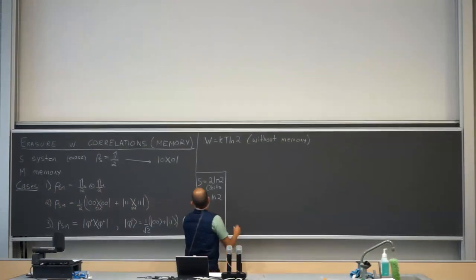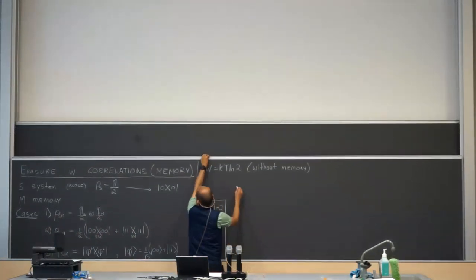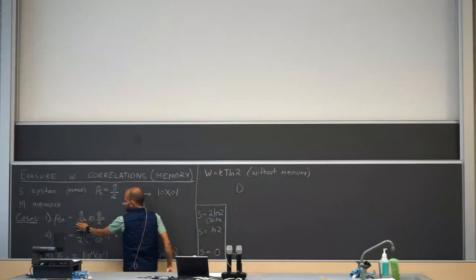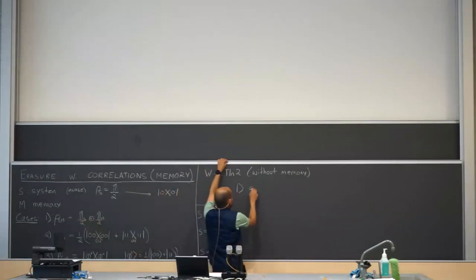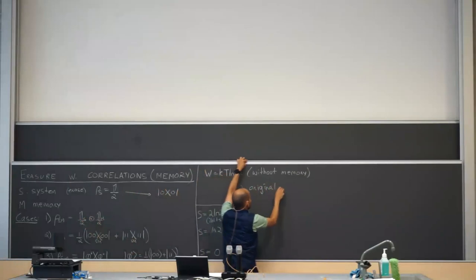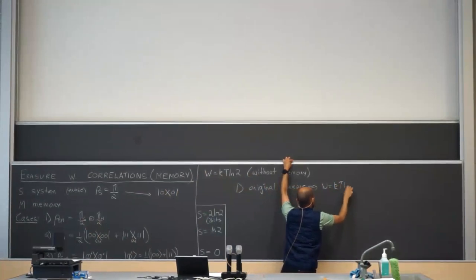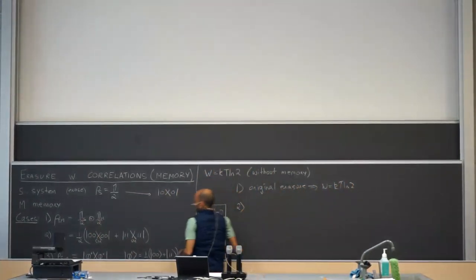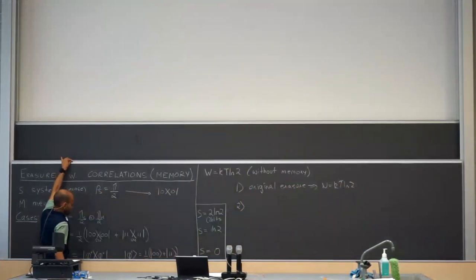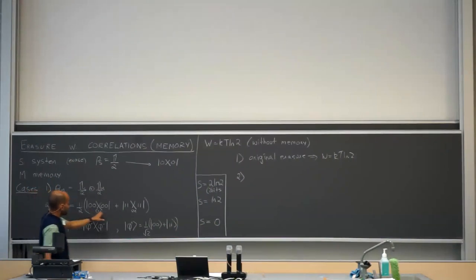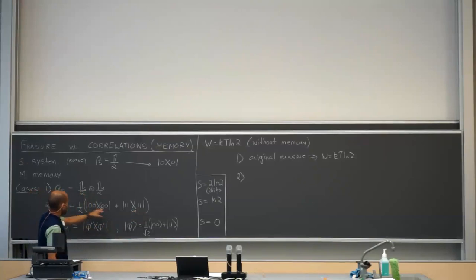This already gives you a hint, because the whole point of erasure is to take something from a higher entropy state to a lower entropy state. In case one, there is nothing really you can do because you are in a tensor product state — the memory doesn't tell you anything about the system. So the thing you do is the original erasure, which means W = kT log 2.